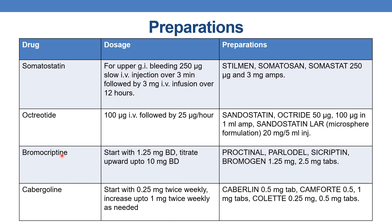The next drug is bromocriptine. Dosage: start with 1.25 mg twice daily and titrate upward up to 10 mg twice daily. Preparations are Proctinol, Parlodel, Sicriptin, and Bromogen, available in 1.25 mg and 2.5 mg tablets.